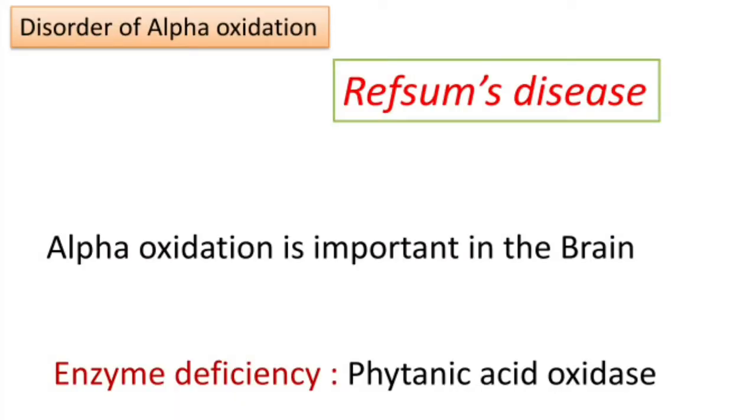Starting with Refsum's disease, it is a disorder of alpha oxidation. As we have seen in the previous video, alpha oxidation is important in the brain and is concerned with oxidation of branched chain fatty acids. One of the major dietary fatty acids is phytanic acid, which is a branched chain fatty acid.